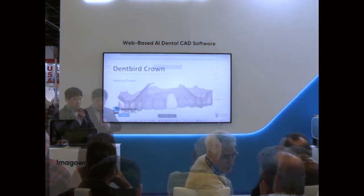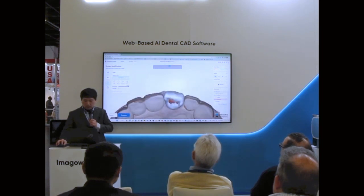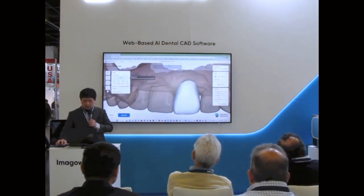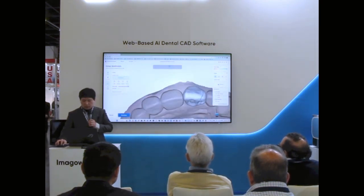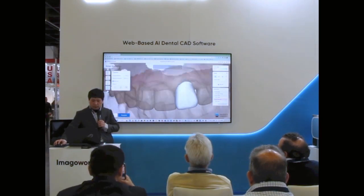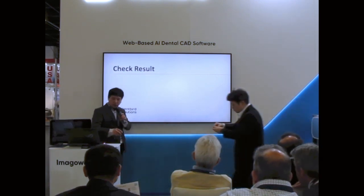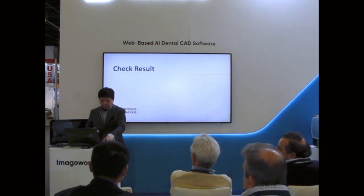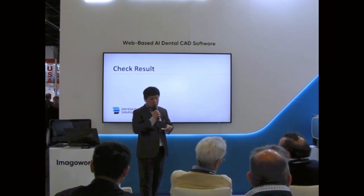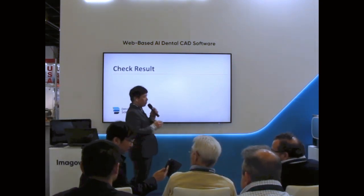Let's design the anterior crowns with a slight modification. The building process has been completed. Let's fit the restoration to the model. I will hide the model so you can see it clearly.